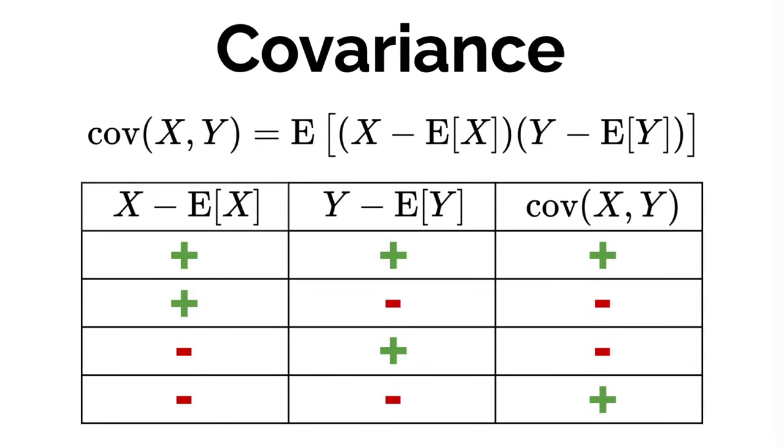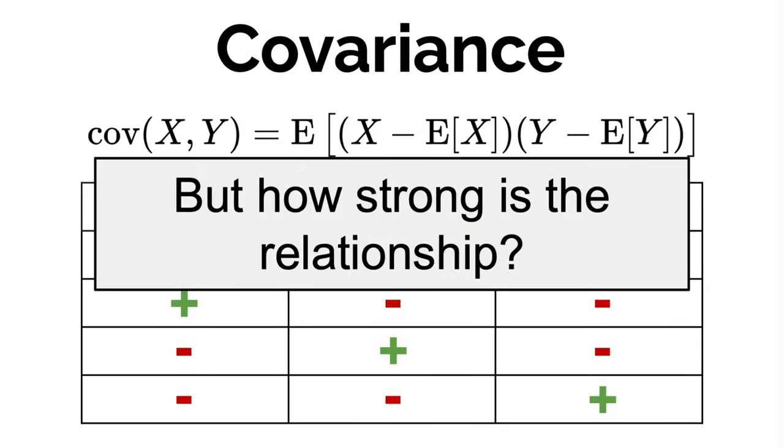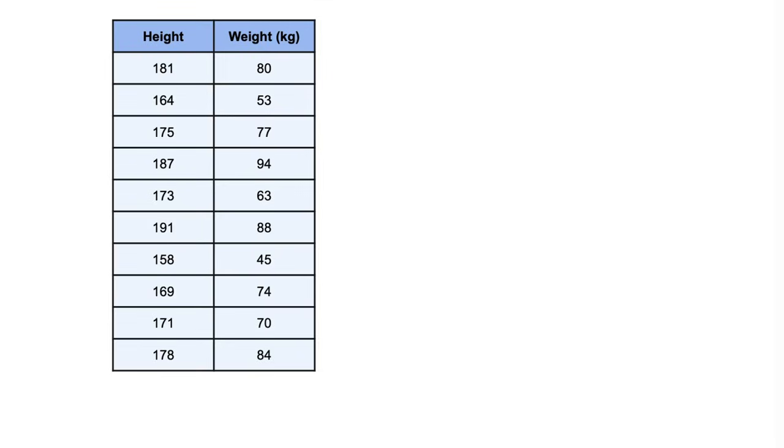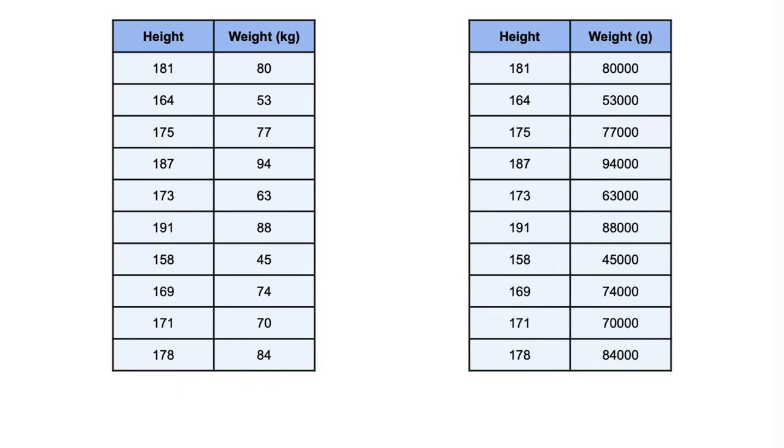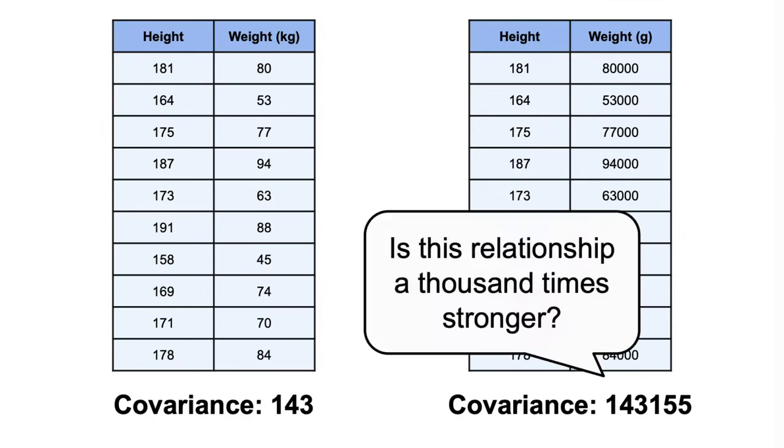However, although the covariance can indicate the kind of relationship two random variables may have, it cannot tell us how strong that relationship is. For instance, in the first example, if we were to measure the weight in grams instead of kilograms, we would obtain a covariance that is a thousand times larger. So does this mean that the relation between those two variables is a thousand times stronger? Well, the answer is simply no, because the covariance gets influenced by the scale of each variable.